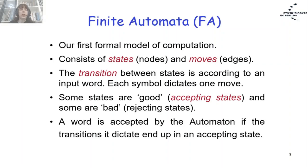Let's talk about Finite Automata. Finite Automata will be our first formal model of computation. A Finite Automaton is actually a graph with nodes and arrows. The nodes represent the states of the automaton, and the directed edges represent transitions — each time we have an arrow going out from a state, that means we made a transition, moving from one state to another because we read an additional letter in the input.